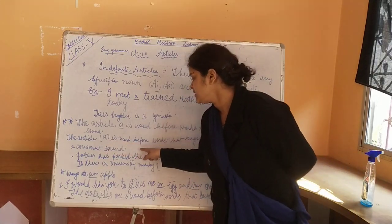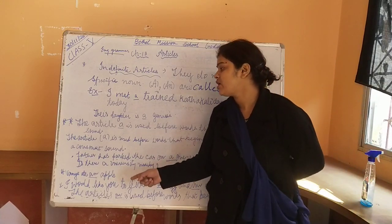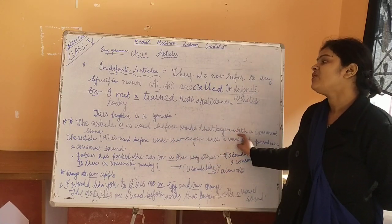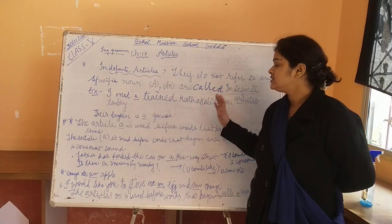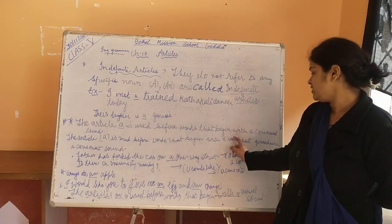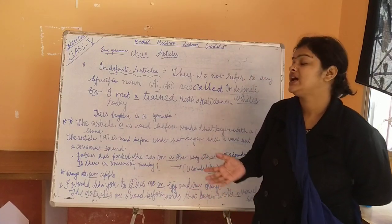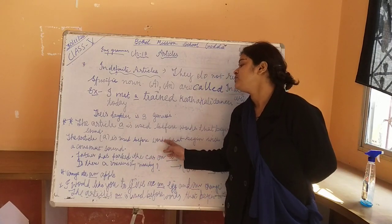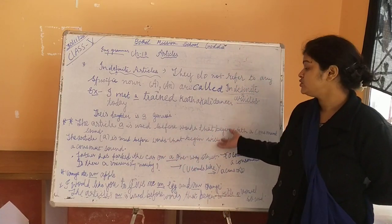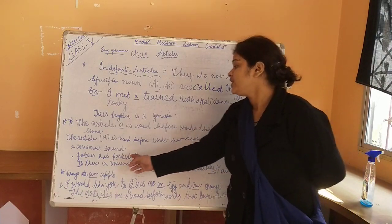The article A is also used before words that begin with a vowel but produce a consonant sound. A can be used before a word which begins with a vowel but produces a consonant sound.